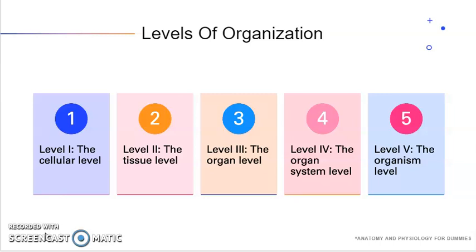Level 1 is the cellular level. Level 2 is the tissue level. Level 3 is the organ level. Level 4 is the organ system level. And number 5 is the organism level.